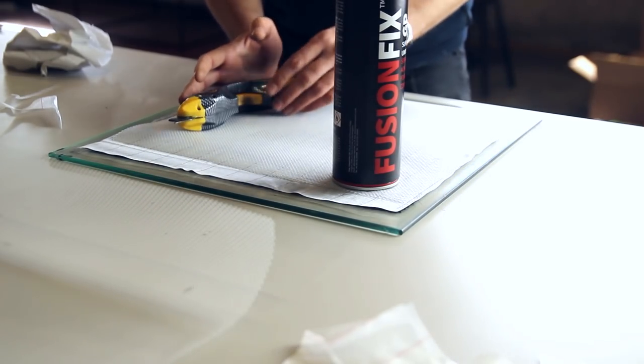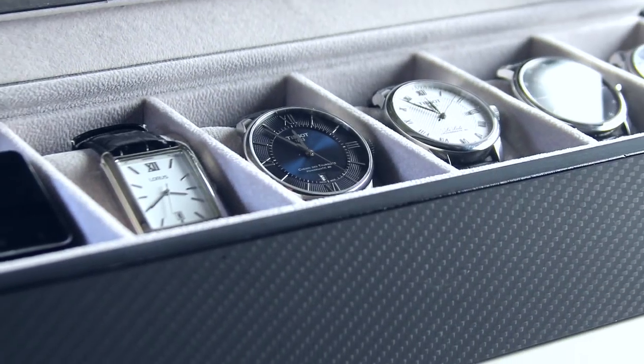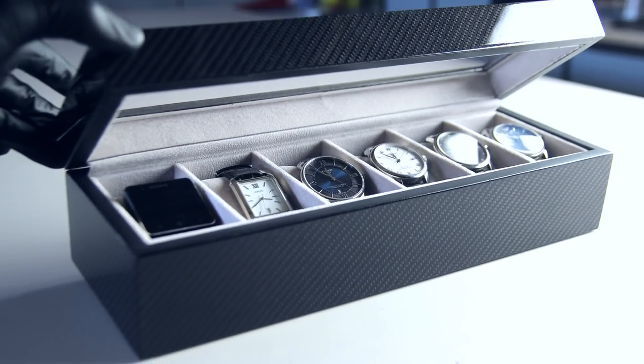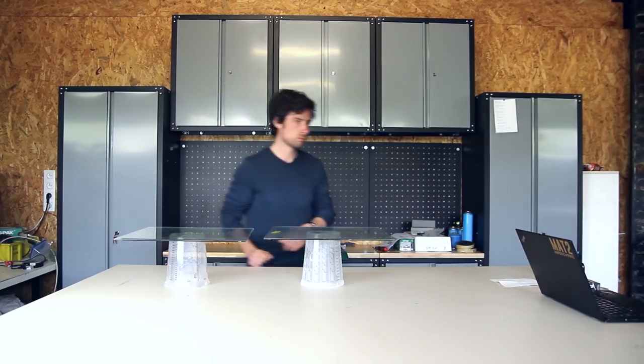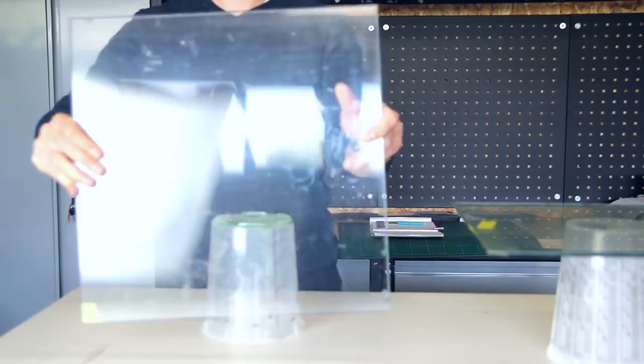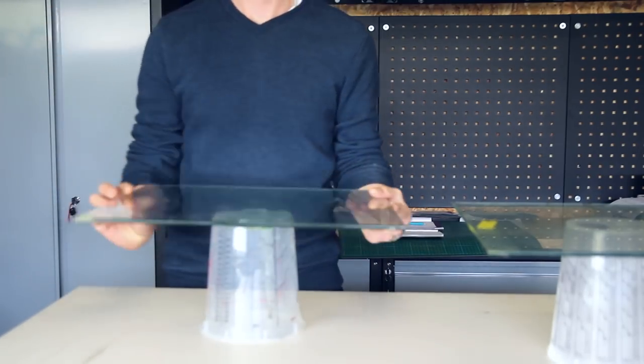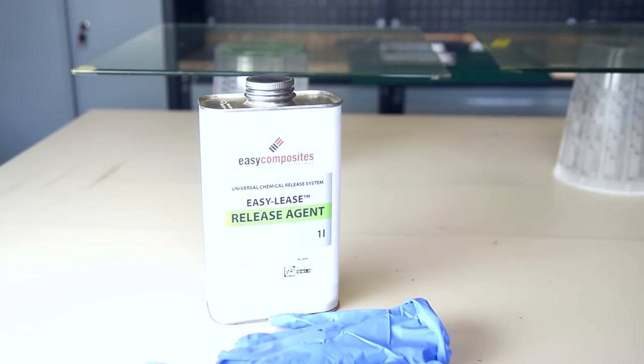We'll be using two glass plates to make carbon fiber veneer. I call it carbon fiber veneer because we'll be using it to veneer a watch case in the next tutorial to come. I'll add the watch case tutorial in the description down below.